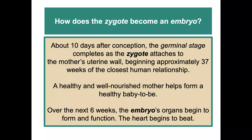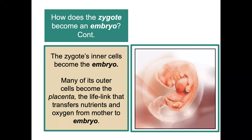About 10 days after conception, the germinal stage completes as the zygote attaches to the mother's uterine wall, beginning approximately 37 weeks of the closest physically possible human relationship. A healthy and well-nourished mother helps form a healthy baby. Over the next six weeks, the embryo's organs begin to form and function, and the heart begins to beat. The zygote's inner cells become an embryo, while many of its outer cells become the placenta — the life link that transfers nutrients and oxygen from the mother to the embryo.